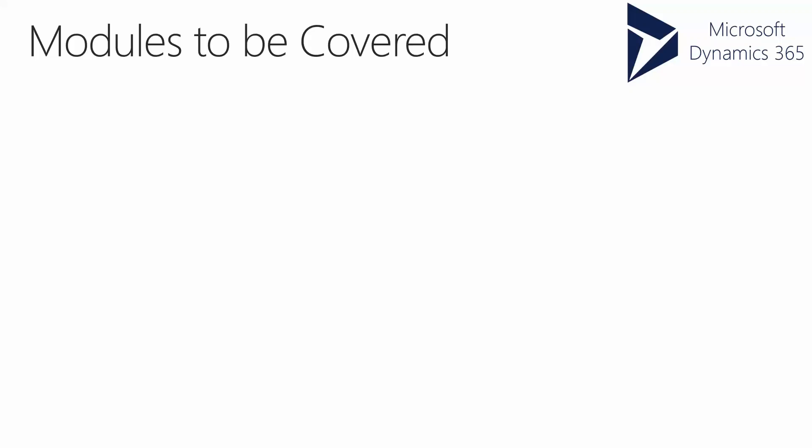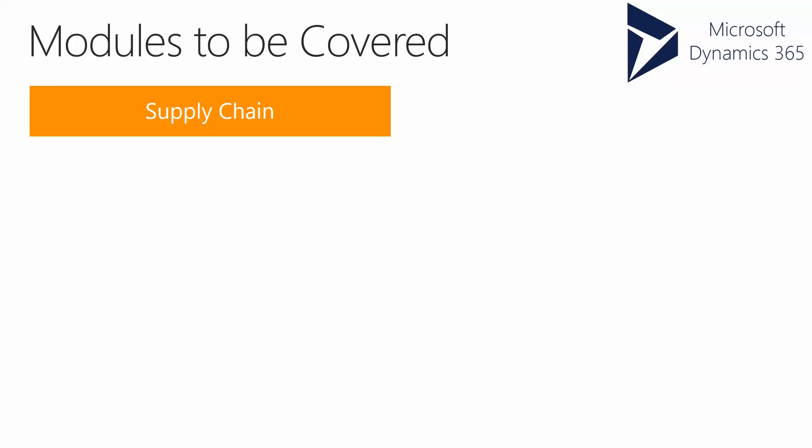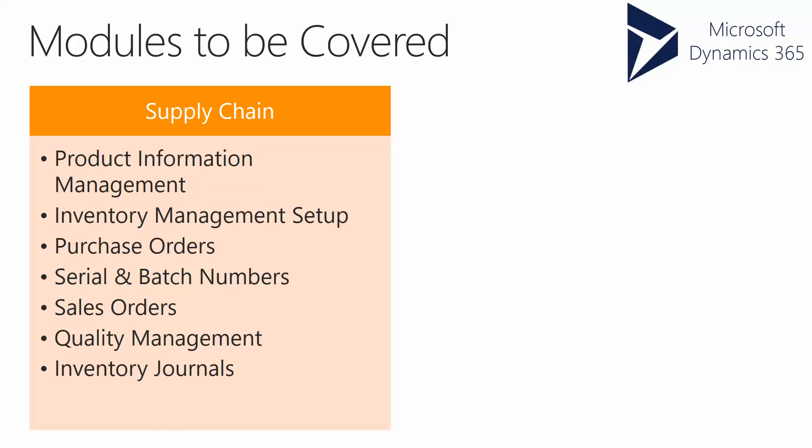We're going to talk about two major functionalities: Supply Chain along with Distribution and Trade. As far as Supply Chain is concerned, we'll talk about Product Information Management — how to create products and product masters using dimensions, along with how we can start working with dimensions and creating new products into the system.